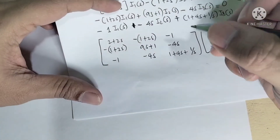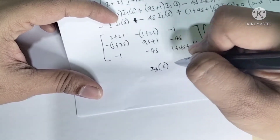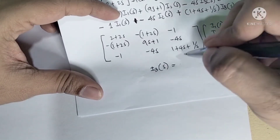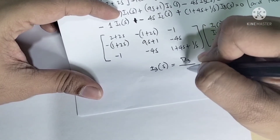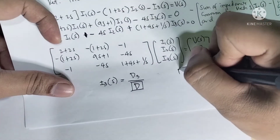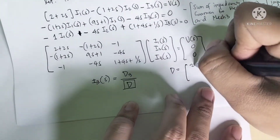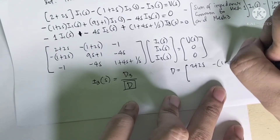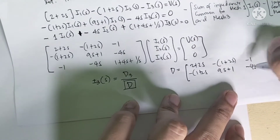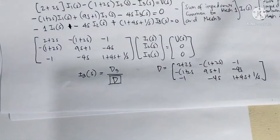Using Cramer's rule, I3(s) equals the determinant D3 divided by the determinant D, where D is the determinant of the coefficient matrix: (2 + 2s), (1 + 2s), negative one; negative (1 + 2s), (9s + 1), negative 4s; negative one, negative 4s, (1 + 4s + 1/s). We can now find determinant D by expanding this matrix.